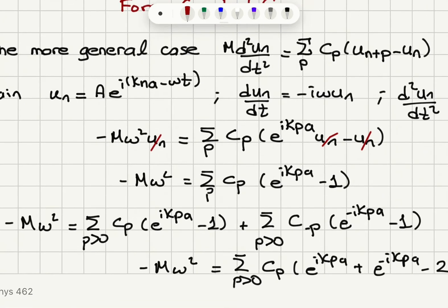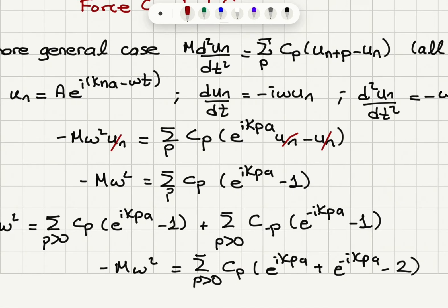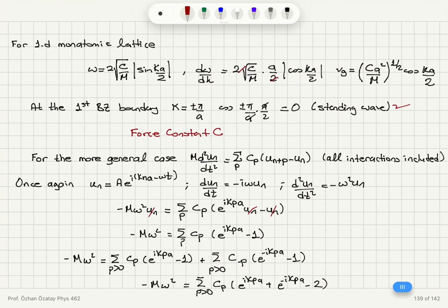So −mω² will be the sum over positive p of cₚ(e^(ikpa) − 1), and also including negative values written as Σₚ₊ c₋ₚ(e^(−ikpa) − 1). This gives us −mω² = Σₚ₊ cₚ(e^(ikpa) + e^(−ikpa) − 2). Why can we write it this way? Because cₚ = c₋ₚ — we have a symmetric situation. The atoms to the right and to the left, as long as we have the same distance between the interacting atoms, will be identical. That is the symmetry requirement.